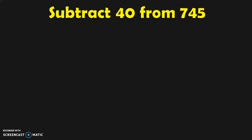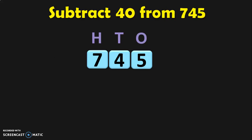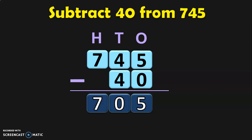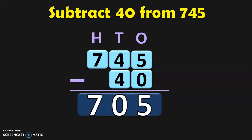Here we are subtracting a two-digit number from a three-digit number. Write down the bigger number first with place values, so when you write the smaller number you can place it in the appropriate column. So 40 is written in the ones and tens place. In the ones place we have five minus zero, which is five. In the tens place, four minus four — when a number is subtracted from itself, the answer is zero. In the hundreds place, there is no digit to subtract from seven, so write down seven. The answer is 705.